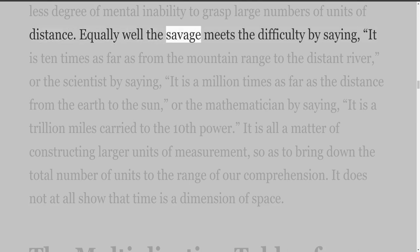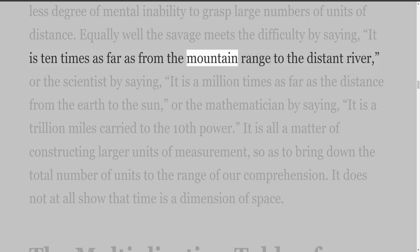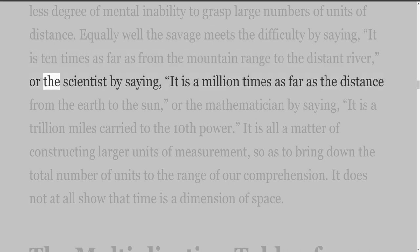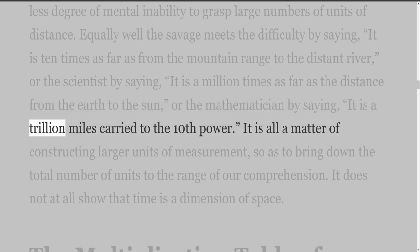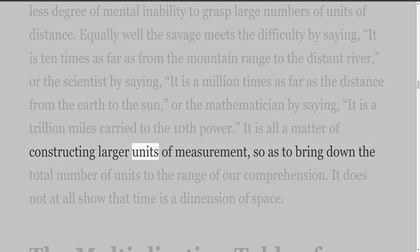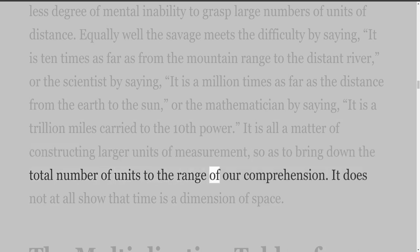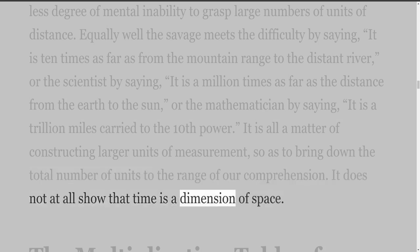Such things — days' journeys of a horse, or months' journeys of a man, or years' journeys of a light ray — do not mean that time is a dimension of space. They signify simply a greater or less degree of mental inability to grasp large numbers of units of distance. Equally well the savage meets the difficulty by referring to familiar distances, or the scientist by saying it is a million times as far as the distance from the earth to the sun. It does not at all show that time is a dimension of space.